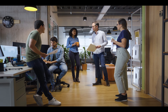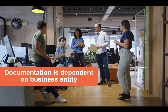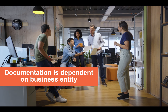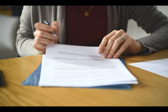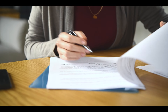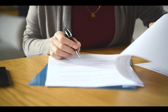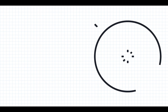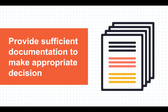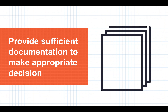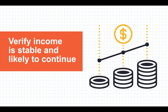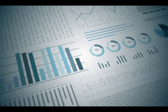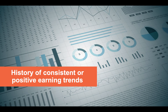In our last tutorial, we discovered that how a self-employed borrower's file is documented can depend on how they have formed their business. We will take that knowledge a step further to uncover exactly what is required to be in the self-employed borrower's loan file. The short answer is that we want to document the file with sufficient documentation in order to make an appropriate decision. We are trying to show that the income is stable and likely to continue, and the best way to do that is to show a history of consistent or positive earning trends.